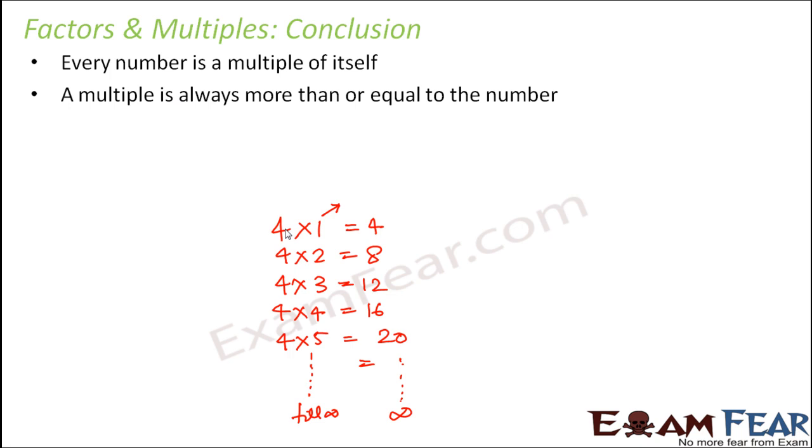A multiple is always more than or equal to the number. So that is another interesting thing. Because when we were talking about factors, we were actually trying to divide the number by their factors. But when we talk about multiples, we try to multiply the numbers. So in order to find the multiples, what are we doing? We are multiplying the number 4 by 1, 2, 3, 4, 5 and so on. But when we were trying to find factors of 4, what were we trying to do? We were trying to divide 4 by 1, 2, 3, 4 and so on, and then try to find out where the remainder is 0. So since here we are multiplying, it is quite obvious that the value of the multiples would be more than that of the number or at least it would be equal to the number.